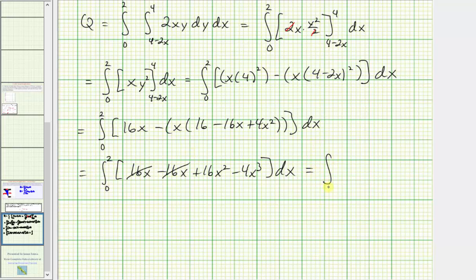So now we have the integral from zero to two of just 16x squared minus four x to the third. And now we can integrate with respect to x. So we'll have 16 times x to the third divided by three minus four times x to the fourth divided by four. Let's go ahead and simplify this. We have 16 thirds x cubed minus x to the fourth.